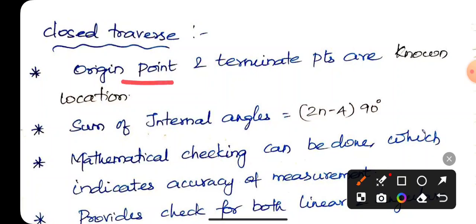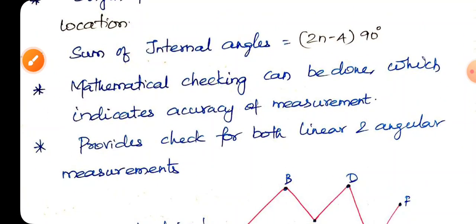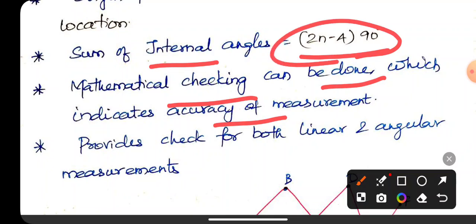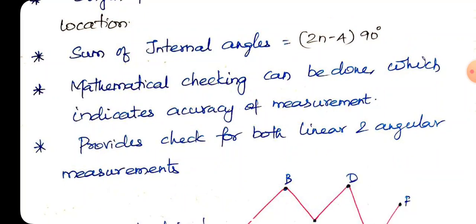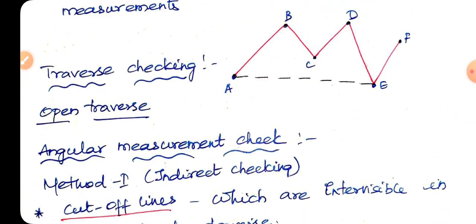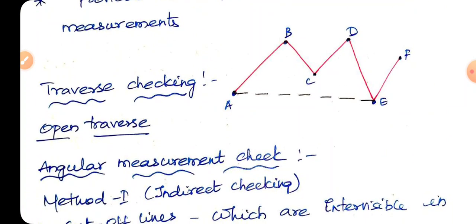Closed traverse: origin point, terminate point two. But open, terminate point we know. The sum of internal angles 2n-4 into 90, so checking in mathematical formula. Mathematical checking indicates accuracy of measurement.